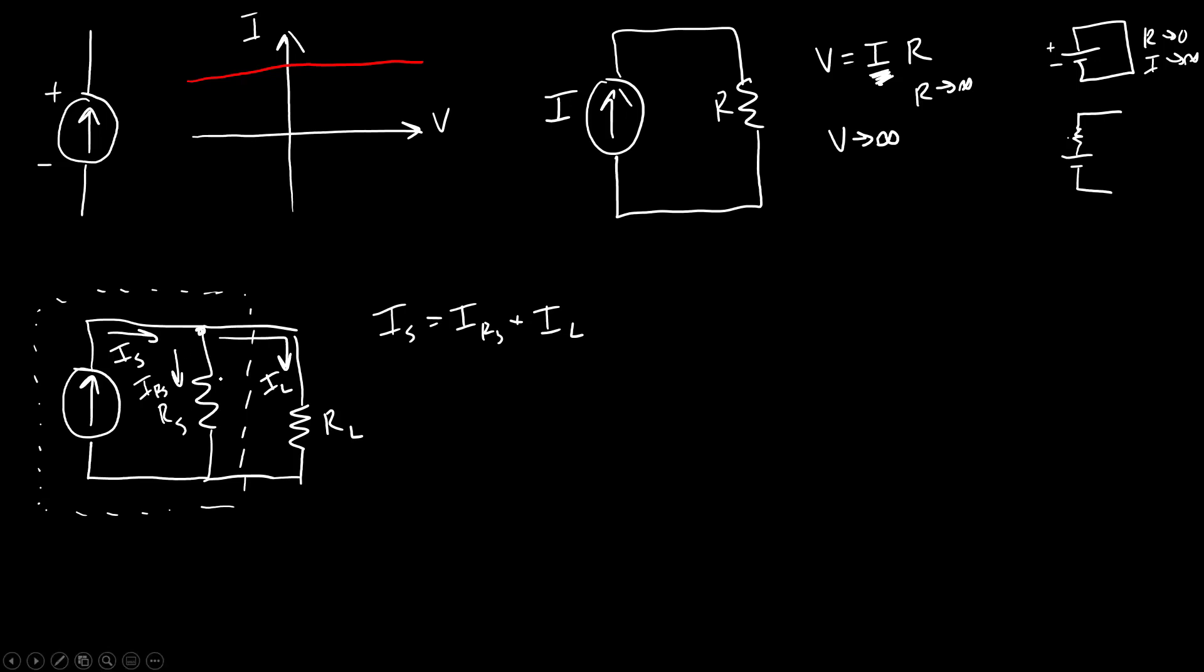Now what we have here is something called a current divider, which is conceptually similar to a voltage divider. I do not have a separate video about that. And I'm not going to go through the derivation, but you can go through a very similar process you did for the voltage divider and arrive at an equation for the load current based on the resistor values and the source current. In this case, that's going to be RS over RS plus RL times IS. And again, remembering that you want this load current to be as close as possible to the source current, that means you want this fraction to be as close as possible to one.